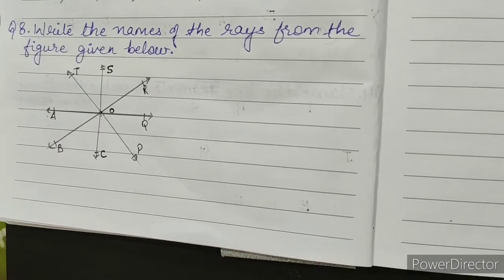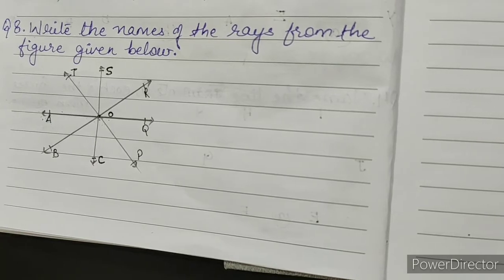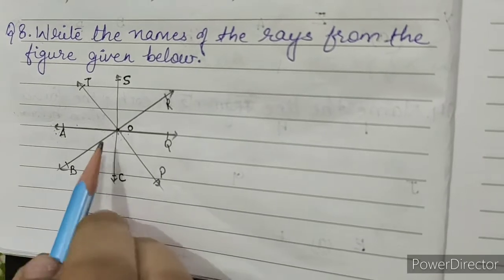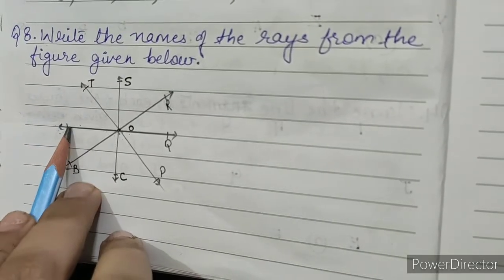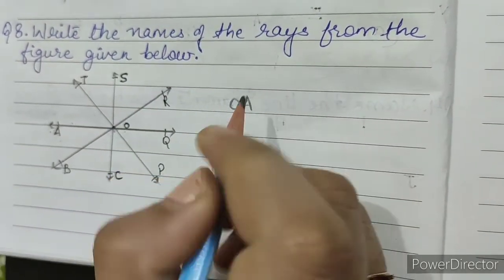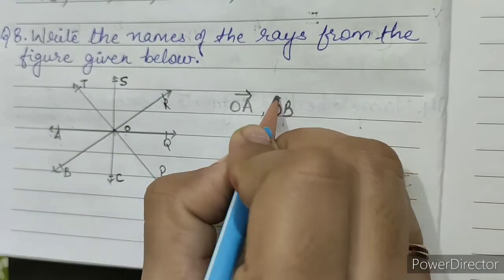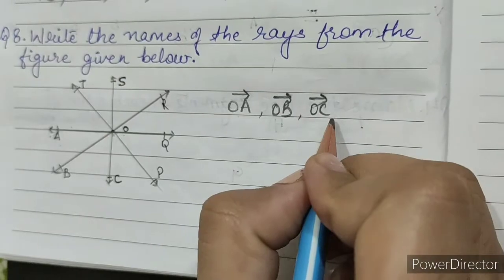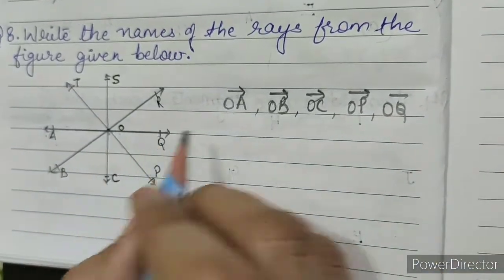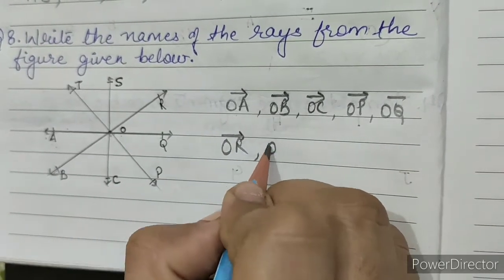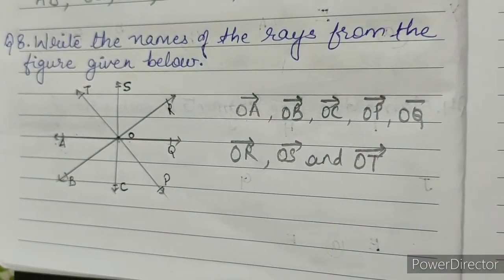Question number 8: write the names of the rays from the figure given below. A ray is a line segment extended endlessly in only one direction. Line segment OA extended endlessly in the direction of A and marked by an arrow at A represents ray OA. So the rays are OA, OB, OC, OP, OQ, OR, OS and OT. This is our answer.